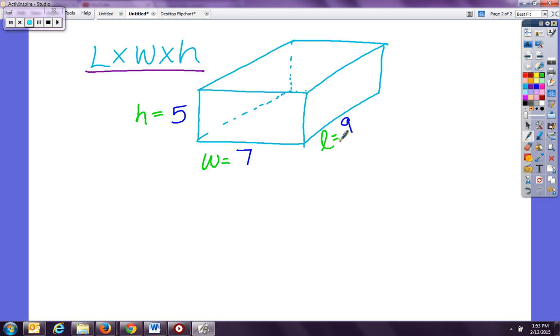So now I'm going to go ahead and plug those numbers in: nine times seven times five. So nine times seven times five is 315. Well I didn't have units on this example, so I'm going to put units cubed.